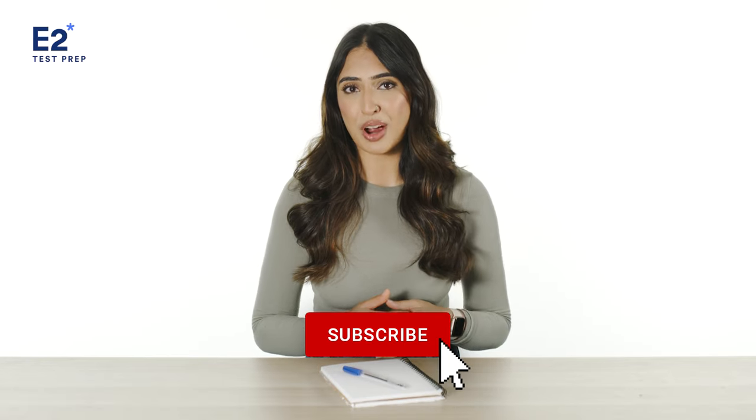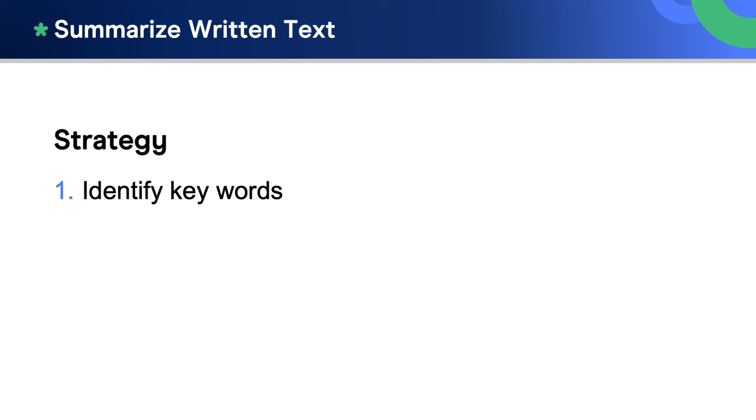Let's now look at some strategies you can use to make this task easier. The first thing you should do is identify key words. These are usually subject nouns and main verbs. Identifying the key words helps us to focus on the essence of the text, the most important thread of meaning, which we summarize in our single sentence summary.